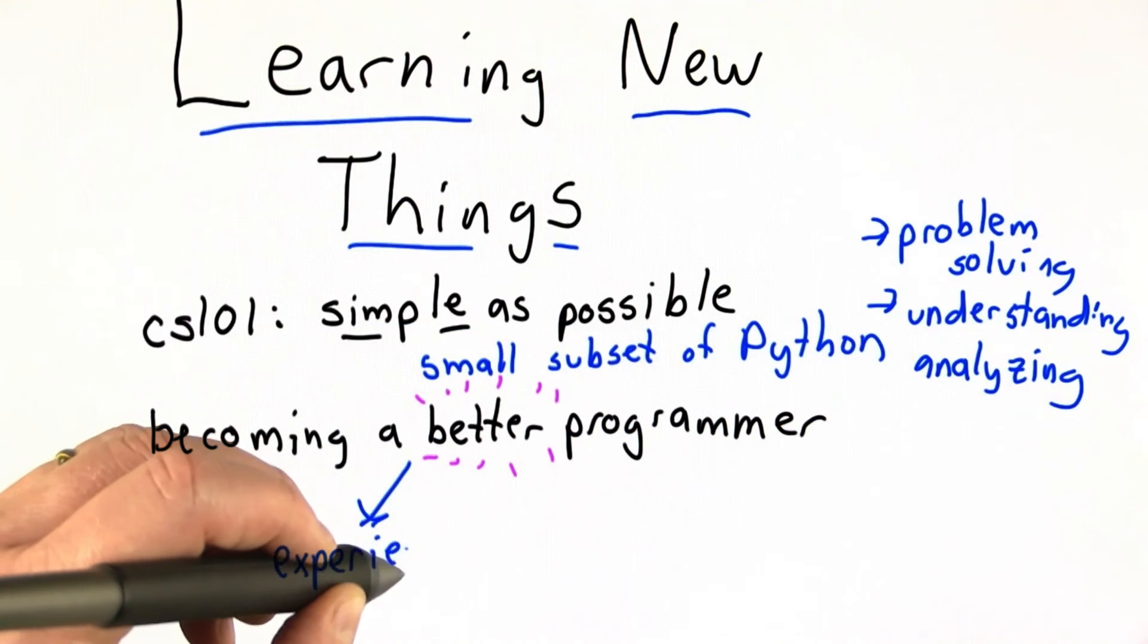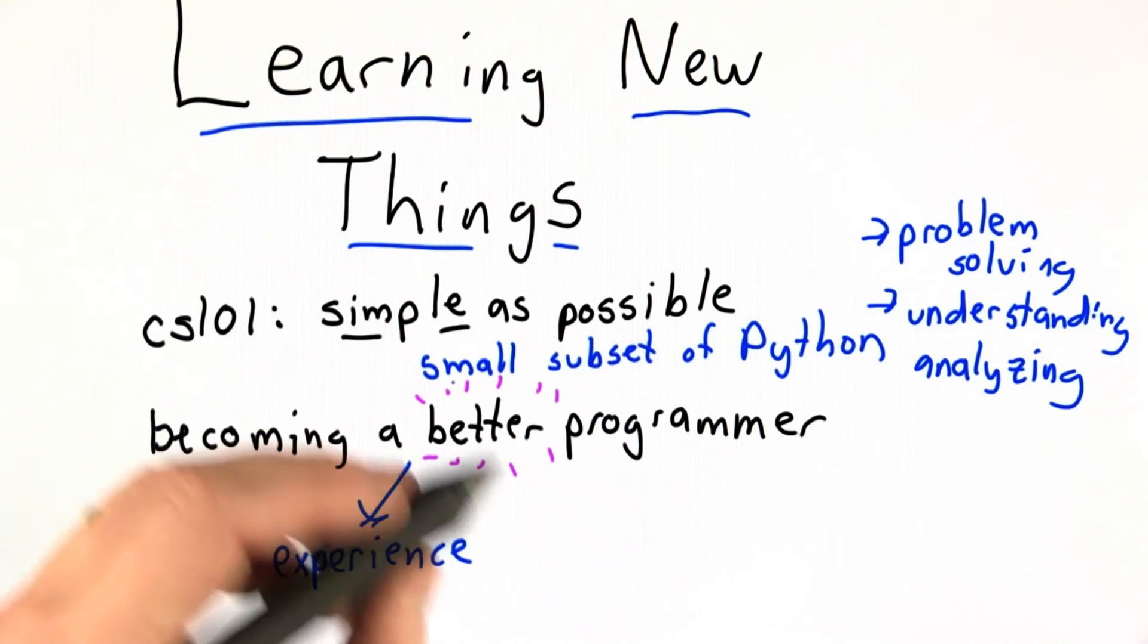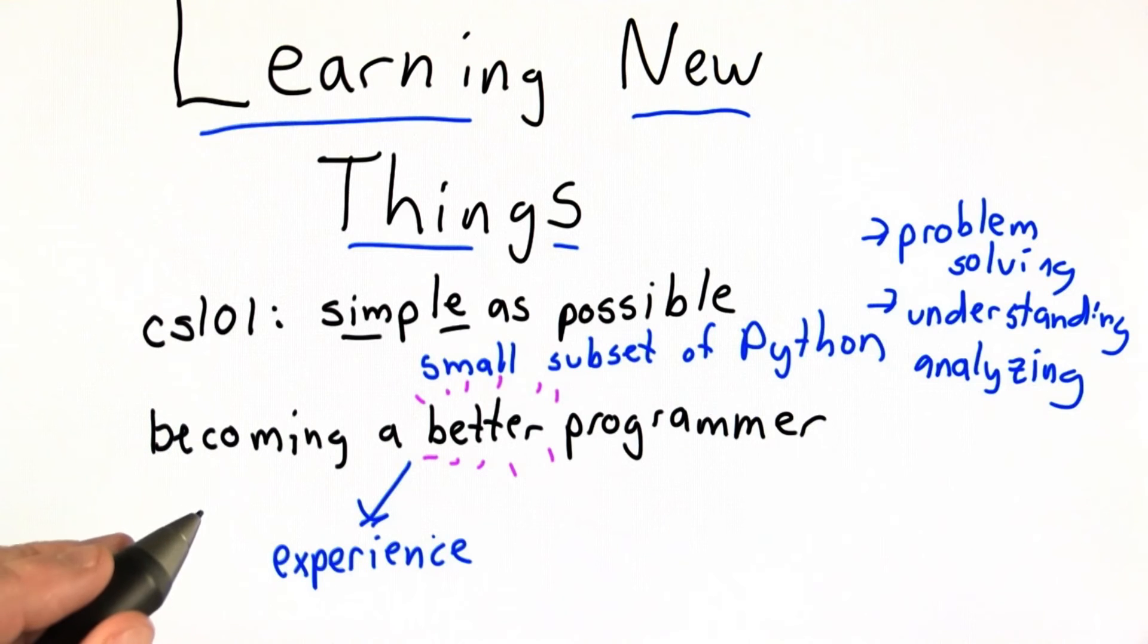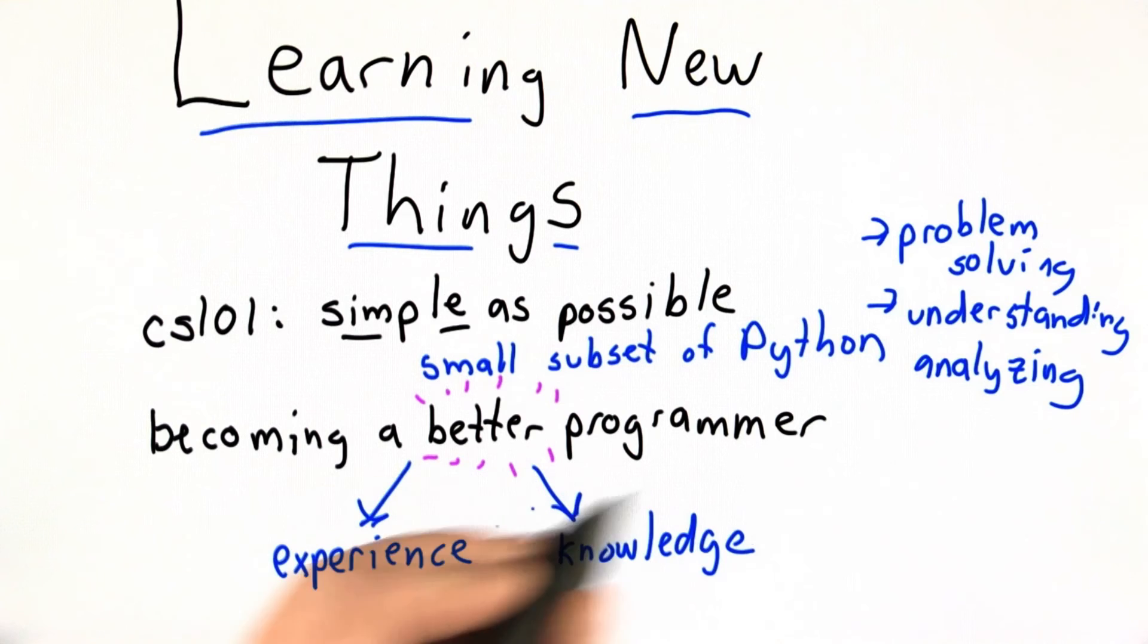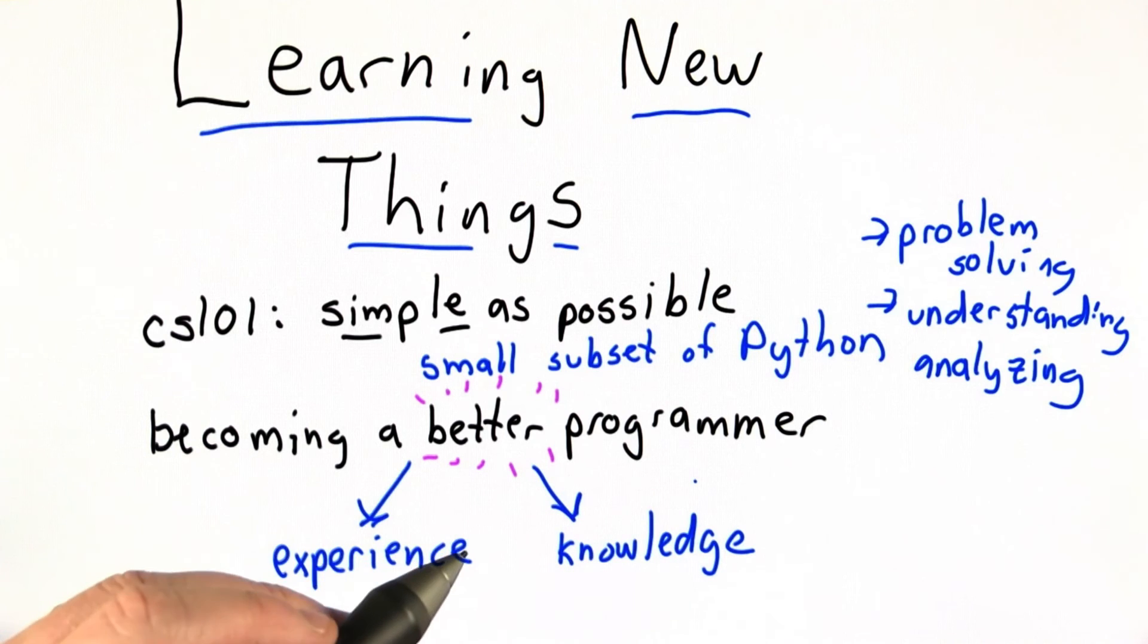Becoming a better programmer really depends on two things. It depends on experience, and you get experience by solving more and more problems. And it depends on knowledge. You gain knowledge also by solving problems, but it's a different kind of thing. Knowledge means learning more language constructs, learning more algorithms, knowing more different ways of solving problems. That's different from the experience you get by solving a lot of problems yourself. And both of those are important for becoming a better programmer.